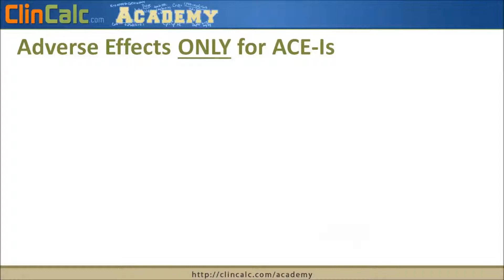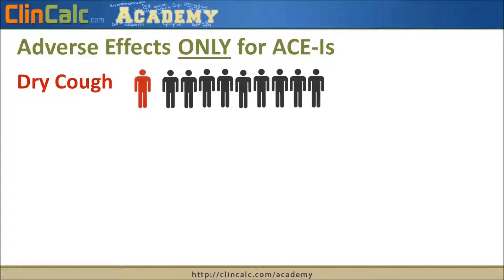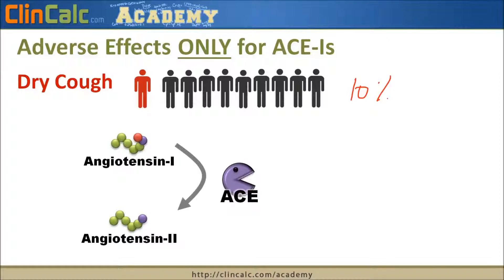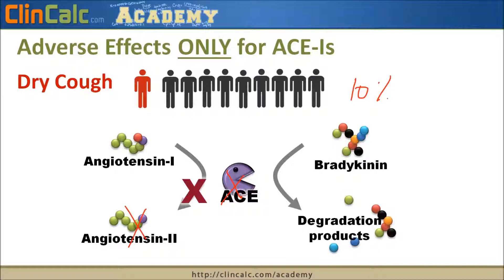ACE inhibitors have one unique adverse effect of their own: dry cough. About 10% of patients who start an ACE inhibitor will develop a dry, hacking cough. The reason is that bradykinin, a hormone that is normally broken down by ACE, accumulates when ACE is blocked. This increase in bradykinin causes the dry cough, which can be troublesome enough that patients stop taking their ACE inhibitor. This adverse effect is not seen with angiotensin receptor blockers.